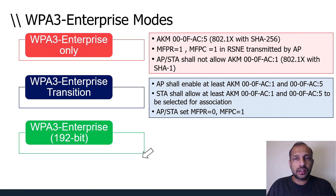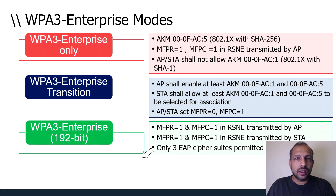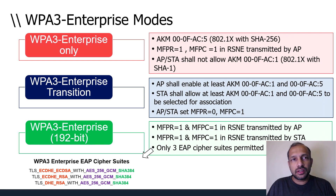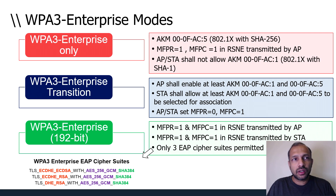WPA3 enterprise 192-bit mode uses AKM value 12, which is CNSA-compliant. In this mode the RADIUS server must pick a cipher suite matching the 192-bit criteria. From an integrity perspective, SHA-384 (192-bit strength) is used; for encryption, 256-bit AES (GCMP-256) is used. For AKM and key management, elliptic curve Diffie-Hellman or traditional Diffie-Hellman groups are used — for elliptic curve a minimum of 256-bit key length is required, and for RSA or traditional DH a minimum of 3072-bit key length is required.